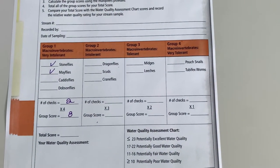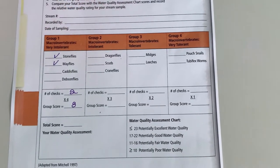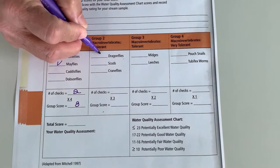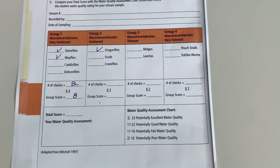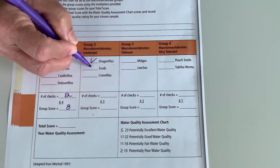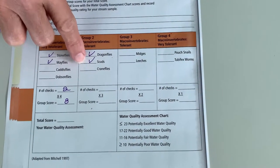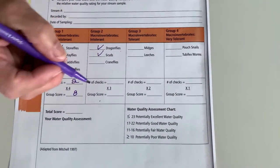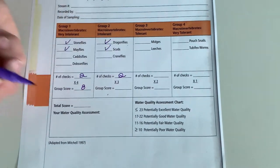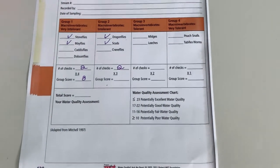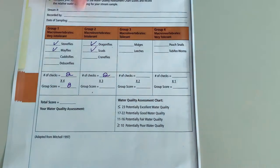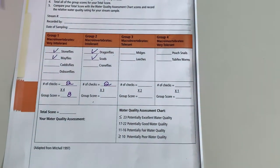All right, let's look at group 2. Let's say we found some dragonflies and some scuds. So again, we found 1, 2 different things. We put the 2 here. Our weighting factor here is a 3. So 2 times 3 is 6.